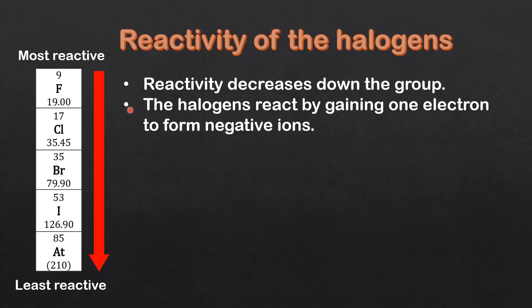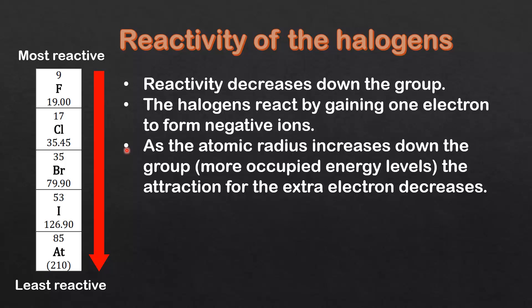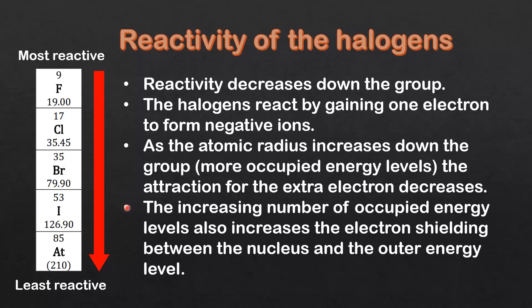The halogens react by gaining one electron to form negative ions. As the atomic radius increases down the group, which means more occupied energy levels, the attraction for the extra electron decreases. Another reason is that the increasing number of occupied energy levels also increases the electron shielding between the nucleus and the outer energy level, and that also decreases the attraction for the extra electron.